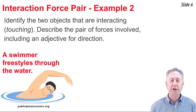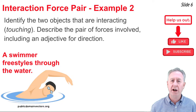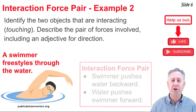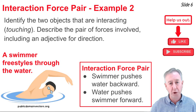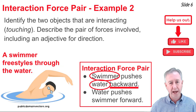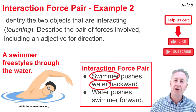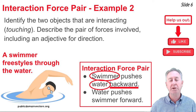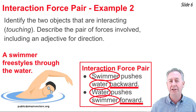In example two, a swimmer freestyles through the water. There are two objects involved here — swimmer and water. If you think about how a swimmer swims through the water, it reaches out its arm and hand, grabs some water, and pushes that water backwards. So when we describe the interaction force pair, we say the swimmer pushes backwards on the water and the water pushes forwards on the swimmer. I have identified the two objects, swimmer and water, and included an adjective that describes the direction. In describing the other force in the pair, I've simply taken the two nouns and switched them around in the sentence, so now the water pushes forward on the swimmer.